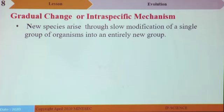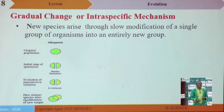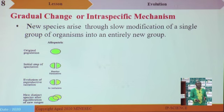Gradual change or intraspecific mechanism. In this mechanism, new species arise through slow modification of a single group of organisms into an entirely new group. Looking at allopatric speciation, the initial step is a barrier that separates two groups. When they separate for too long, gene flow reduces to an extent where even if they reunite, they find it difficult to continue interbreeding, and two species have been formed.